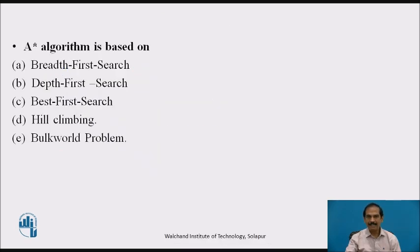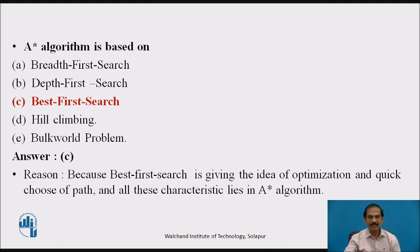After reviewing the A-star algorithm, let us take some MCQs. The first MCQ is: the A-star algorithm is based on — A) breadth-first search, B) depth-first search, C) best-first search, D) hill climbing, or E) bulk word problem. The answer is best-first search, because best-first search provides the idea of optimization and quick path selection, and all these characteristics are present in the A-star algorithm.